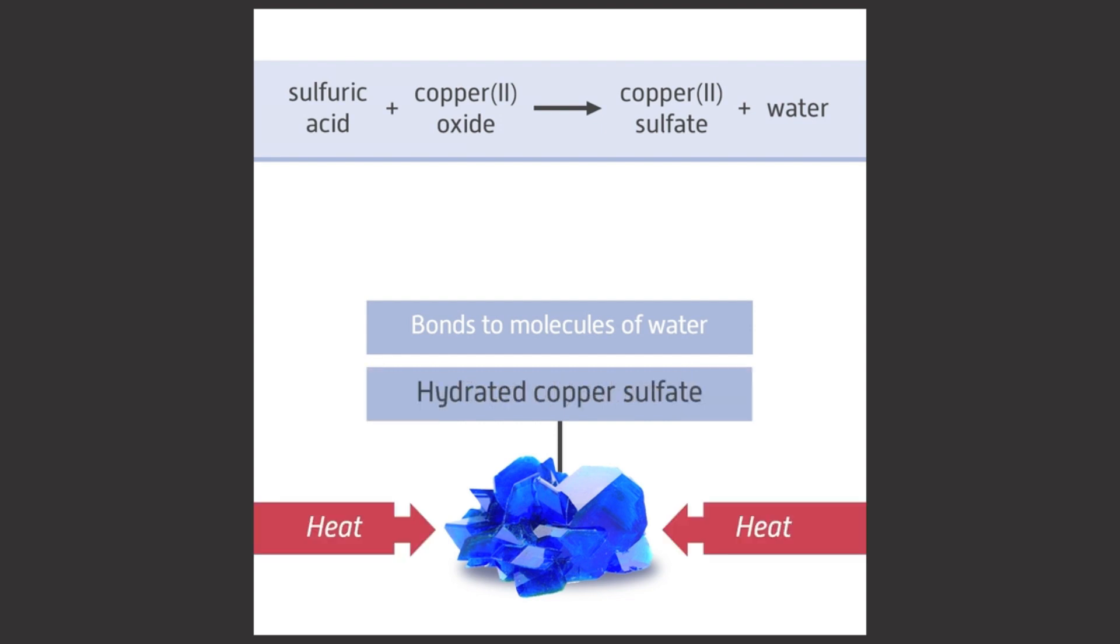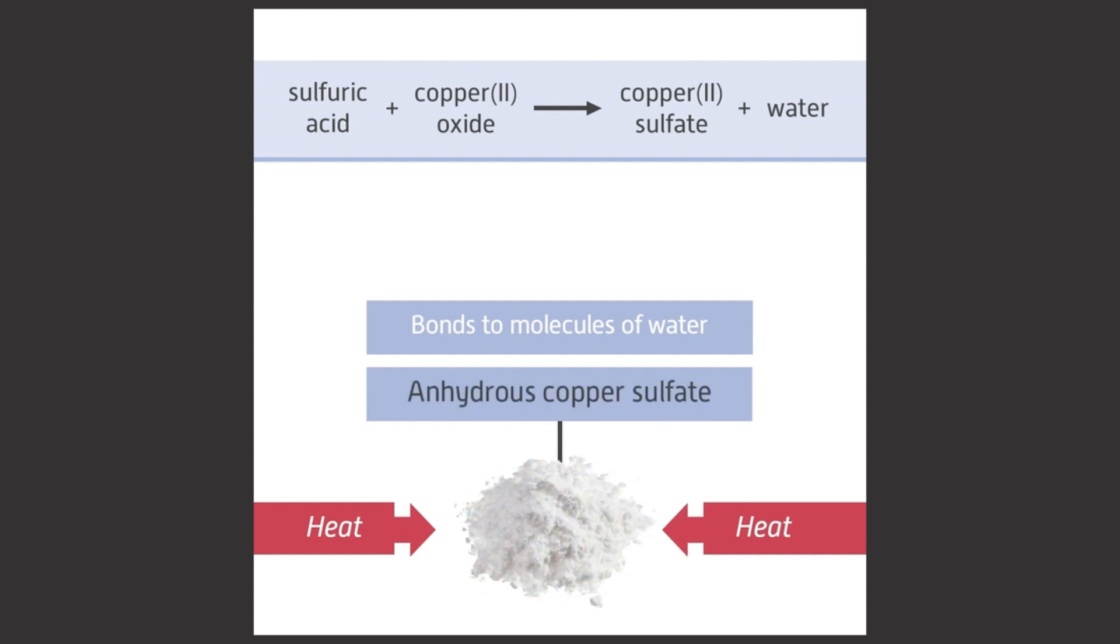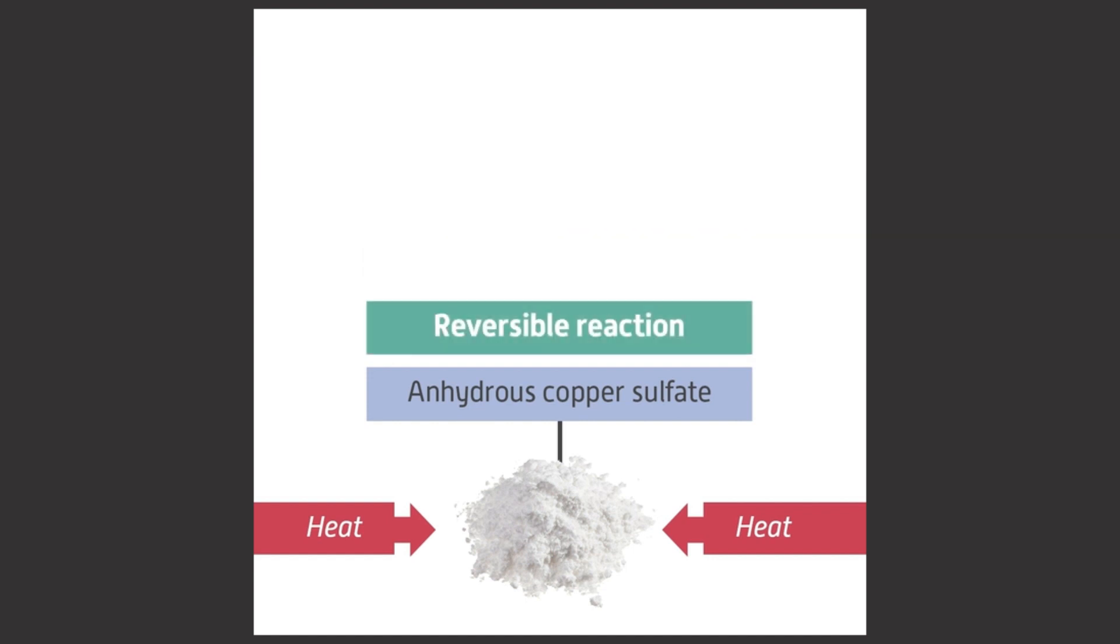If you heat the blue crystals, they turn to a white powder. This is anhydrous copper sulfate and is formed because the water from the crystals has been evaporated. This is an example of a reversible reaction because if you add water to anhydrous copper sulfate, it will turn blue as the hydrated form is made.